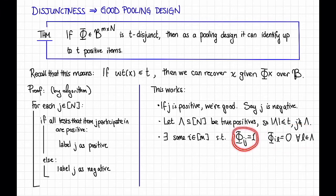But what do these two things mean? This means that item j is in test i. And this means that there is no positive item in test i. That is, this assures us that test i is going to come up negative, and this assures us that item j participated in test i.